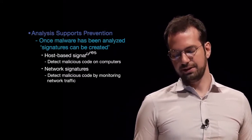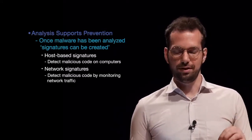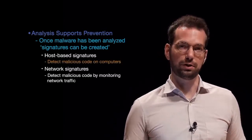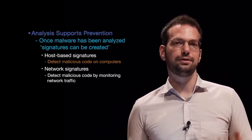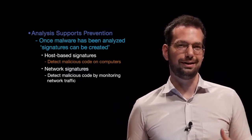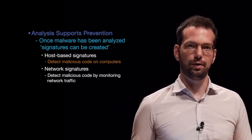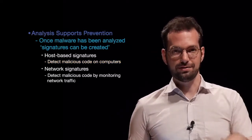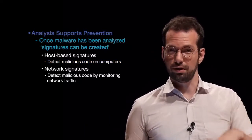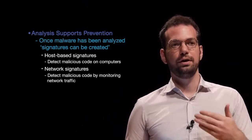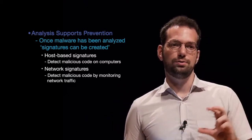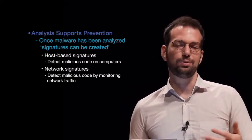Host-based signatures detect malicious code on computers themselves, whereas network signatures detect malicious code by monitoring network traffic. So we have a couple of different layers for malware analysis — looking for signatures either on the computer, in the files that exist or the way files are running, or in the data sent over the network. What do those data patterns look like? Do they represent anything that looks like it might be malicious?